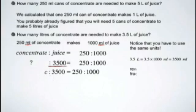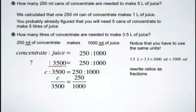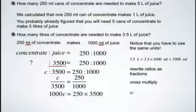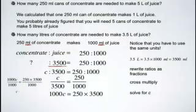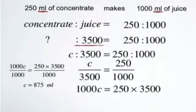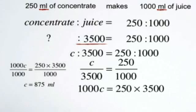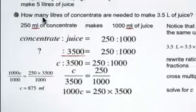I replace the question mark with a variable, C in this case for concentrate. I rewrite it as fractions, cross multiply, and solve for C. And when I'm done that, I end up with 875 milliliters. Not a bad looking answer at all. But here comes one of the other problems.